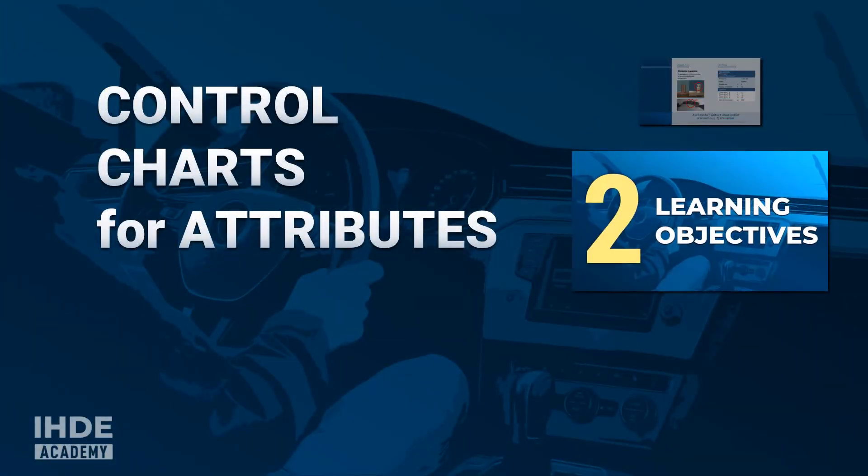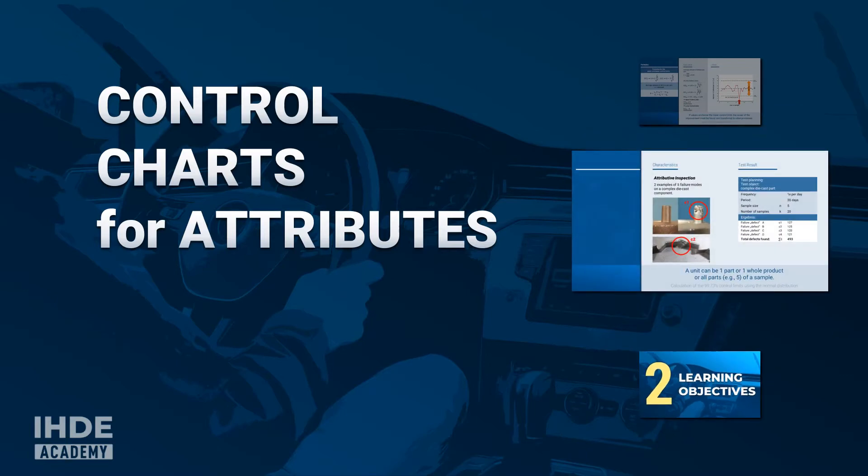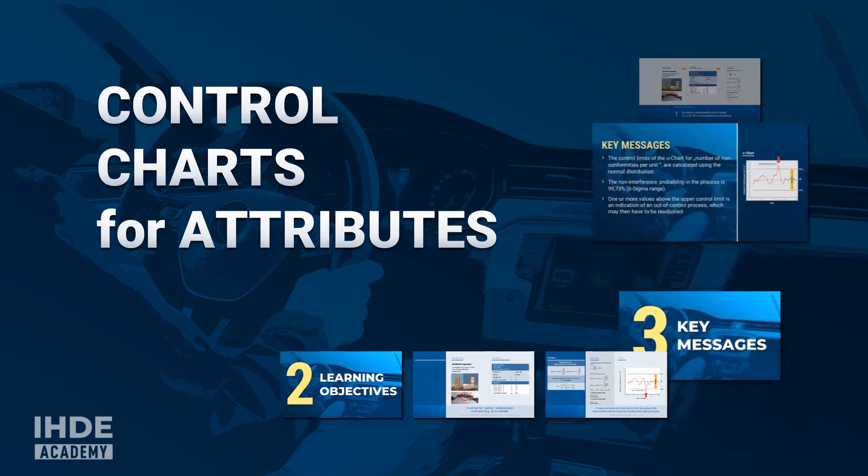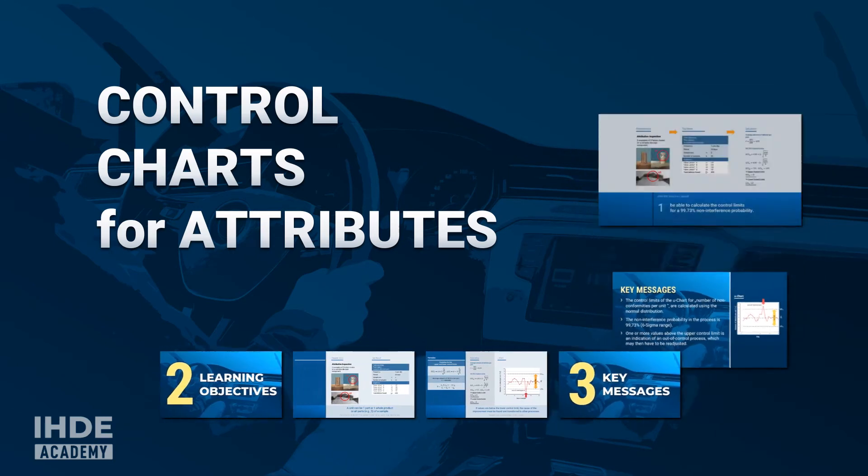The U-Chart is the control chart for monitoring the number of defects per unit or subgroup. In this lesson, we calculate the control limits, create and interpret the control chart.